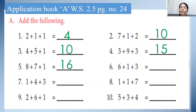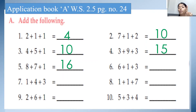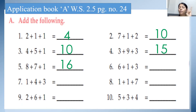See the next one: 6 plus 1 plus 3. So 6 in the mind, 1 on the finger. After 6, the next number is 7. Then 7 in the mind, 3 on the finger. After 7: 8, 9, 10. So 6 plus 1 plus 3, the answer is 10.